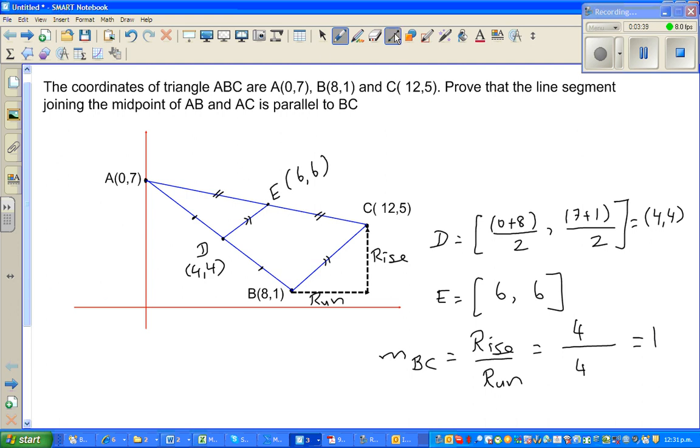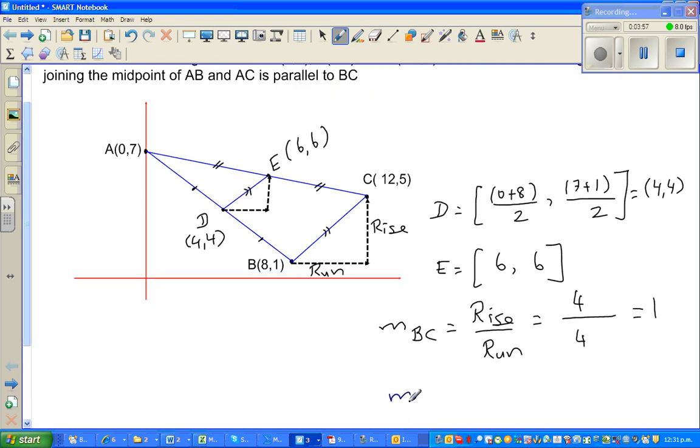Now the same logic applies for the gradient of DE. You look at the run, this is your run, and this is your rise. So the same logic. So now m_DE, m_DE stands for the gradient of DE, is rise over run. So when you're looking at run from 4 to 6, the run is 2, and the rise is also 2 from 4 to 6, so the gradient is 1. So they both have the same gradient, so you can say they are parallel. See you in the next one.